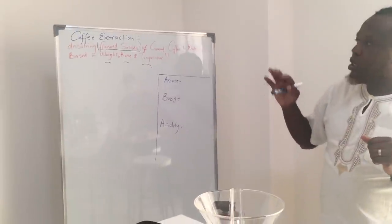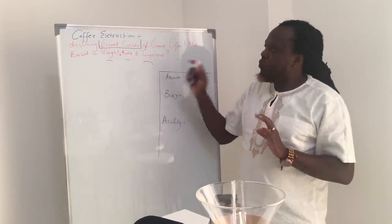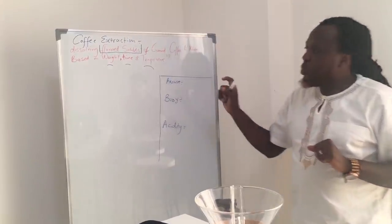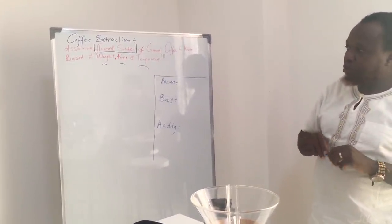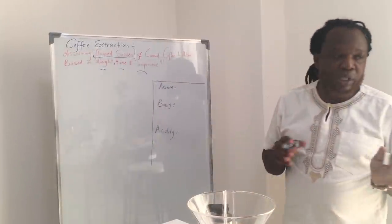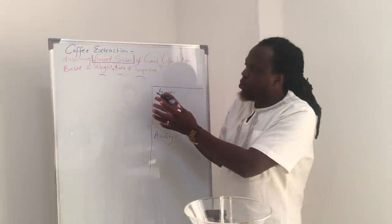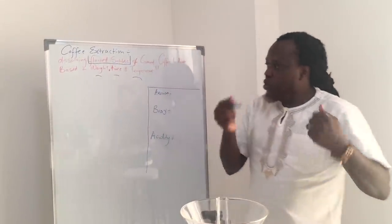So we are saying in short, coffee extraction is dissolving flavored solubles of water based on weight, time, and temperature, which simply shows us that we have a formula. Having said that, if you understand the math or the science behind brewing, you understand brewing.